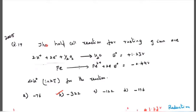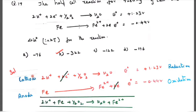2005 question 17. Half cell reaction for rusting of iron: 2H+ plus 2 electron plus O2 gives H2O. The E0 is plus 1.23 voltage. Fe gives Fe2+ plus 2 electron. The E0 value is minus 0.44 voltage. Delta G0 in kilojoule for the reaction. This gains 2 electrons so it's reduction at cathode. This loses electrons so it's oxidation at anode.